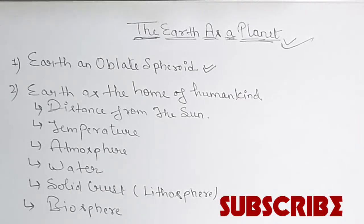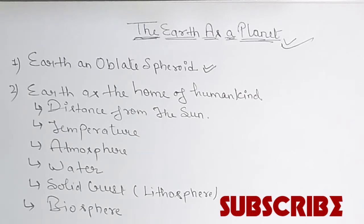Today we will be learning about the topic: Earth as a Planet. Earth is a round object and it moves around the Sun in space. It belongs to the solar family and it moves around the Sun in a fixed path that we call the orbit.